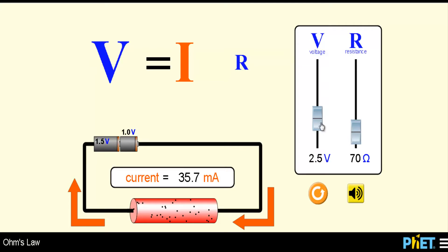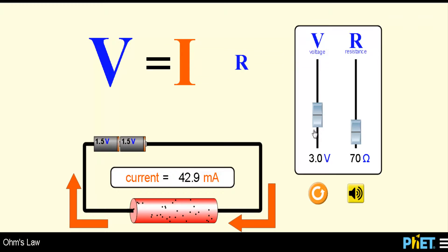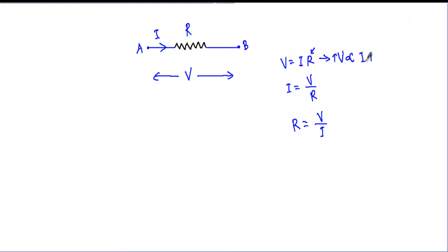If I increase voltage by yet another 0.5 volts, current becomes 42.9 milliamperes — an increment of 7.2 milliamperes. So every time I increase voltage by 0.5 volts, current increases by approximately 7.2 milliamperes. This is a linear relationship — current changes proportionally with respect to the applied voltage.